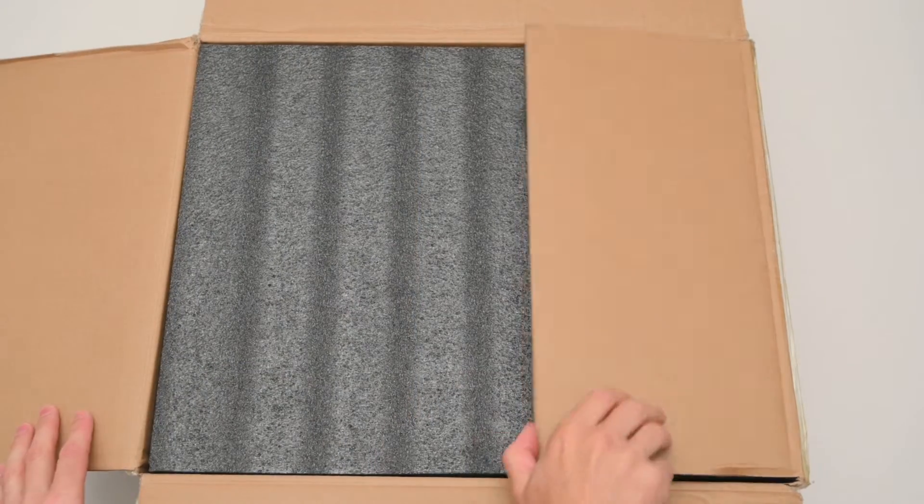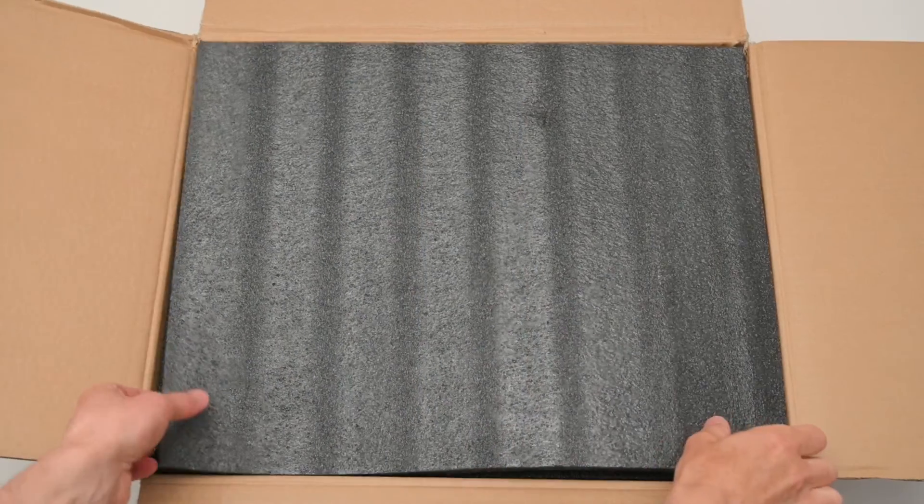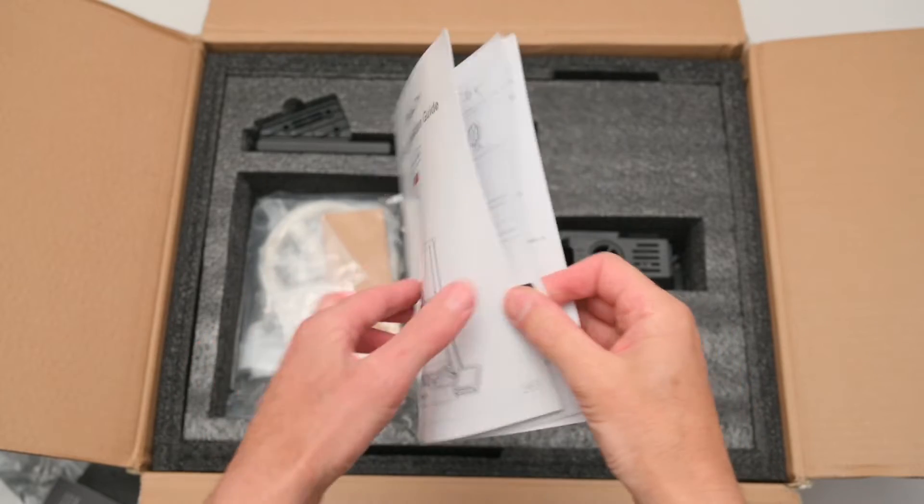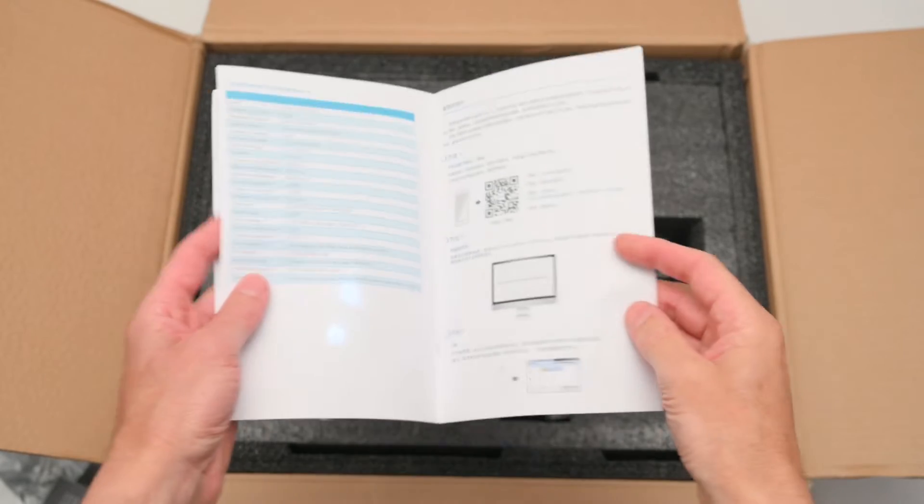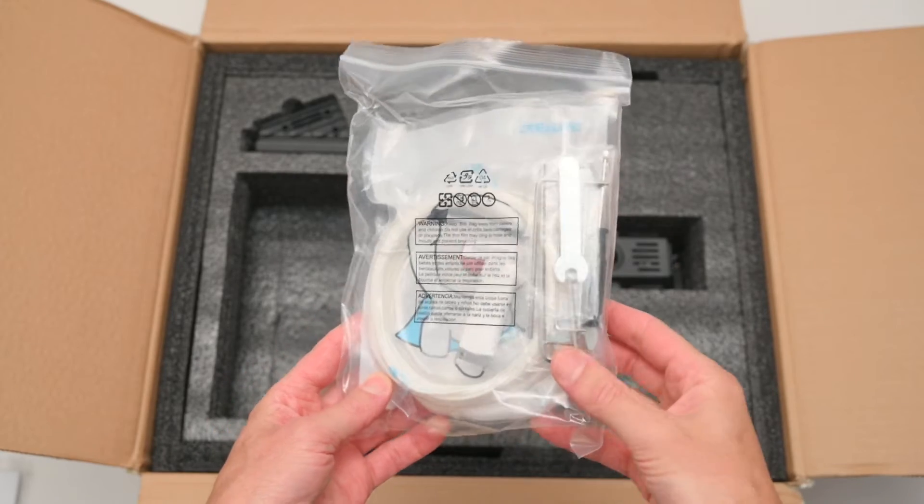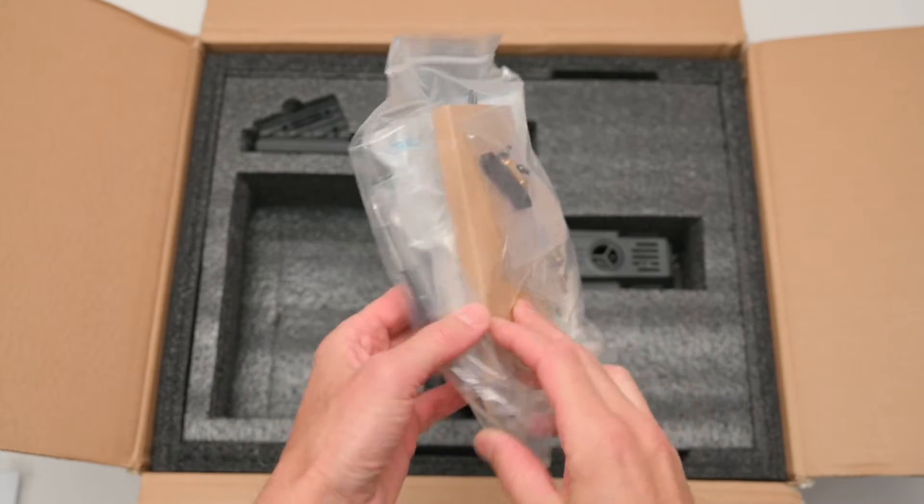The printer comes well packaged and the new frame design allows it to be packed smaller and neater. Everything is included to get you started, there's a quick start guide for the assembly and setting up information of the software. An accessory bag including the assembly hardware, tools, USB stick and the Hyper PLA filament sample.